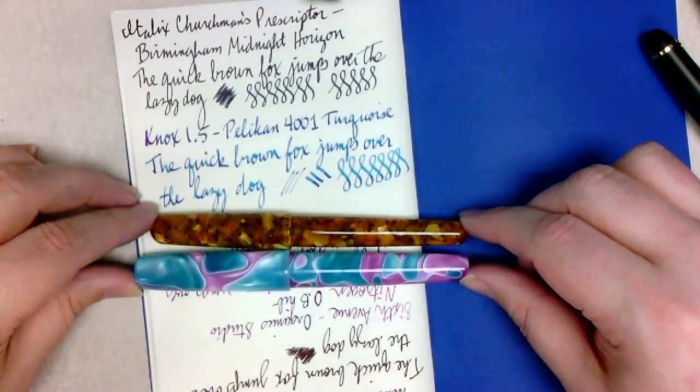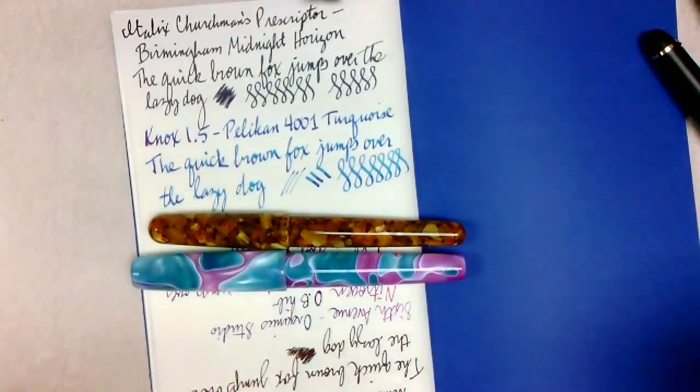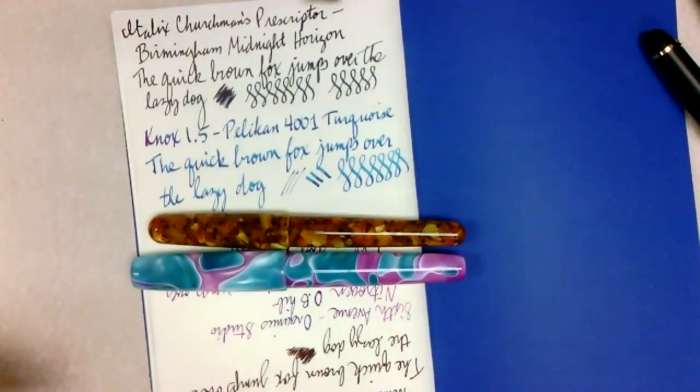All right. So, those are the Birmingham pens, Model A, 6th Avenue. Thanks for watching.